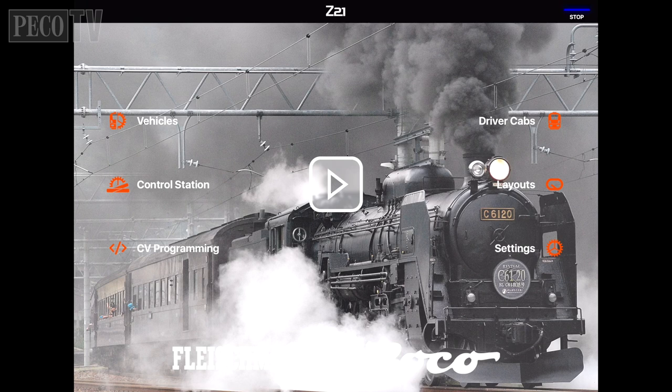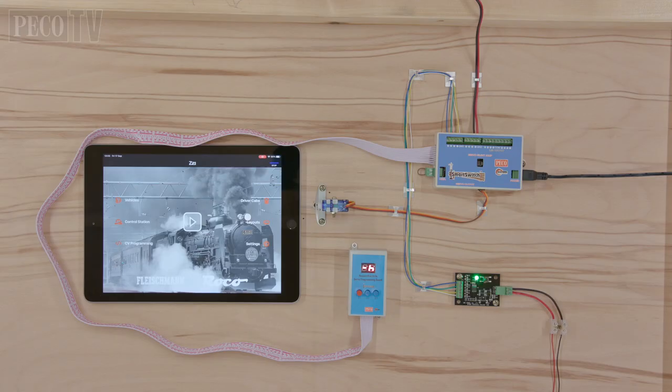In the next part of this film, we are going to install the PLS-135 onto a ROCO Z21. Other DCC command stations may vary, so you may need to consult your controller manual for further information.